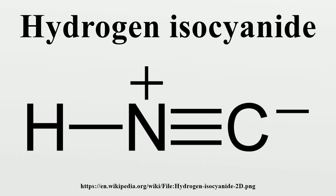Nomenclature: Both 'hydrogen isocyanide' and 'azanolidinium methanide' are correct IUPAC names for HNC. Currently there is no preferred IUPAC name. The second name follows substitutive nomenclature rules, derived from the parent hydride azanol and the anion methanide.